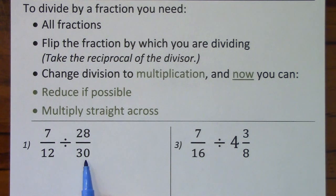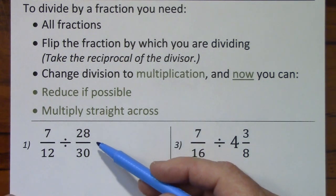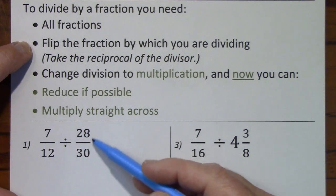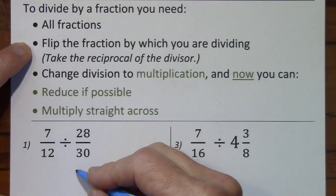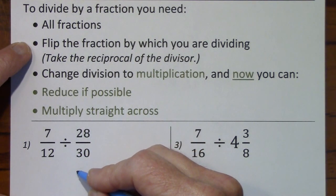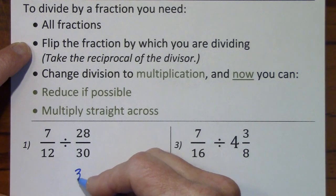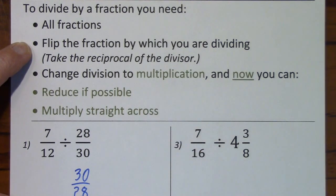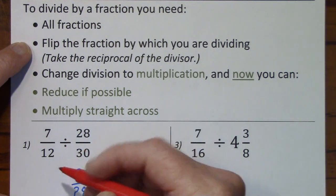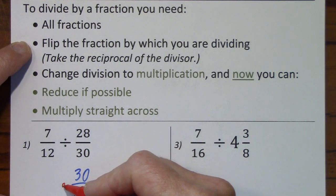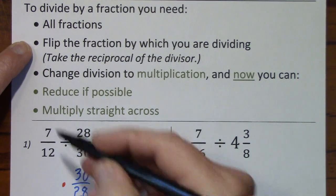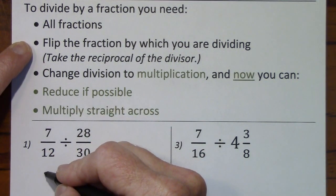We have all fractions, so I will flip the fraction by which I'm dividing, or take the reciprocal, change division to multiplication, and then we'll just bring down the seven-twelfths.